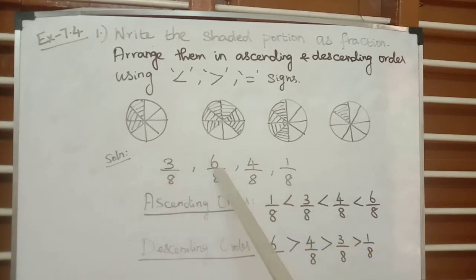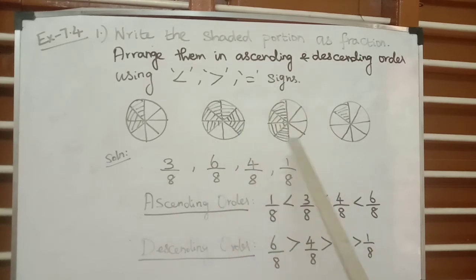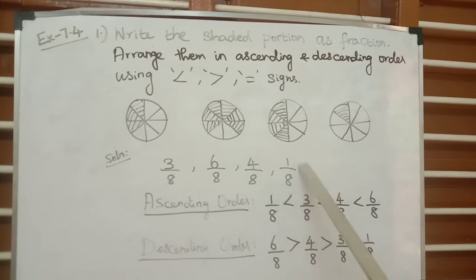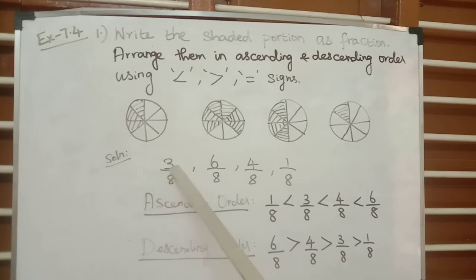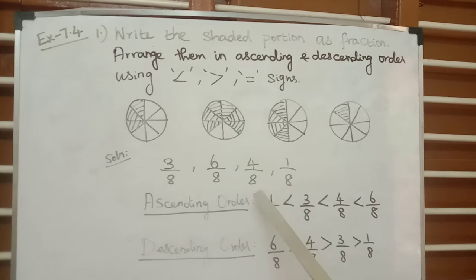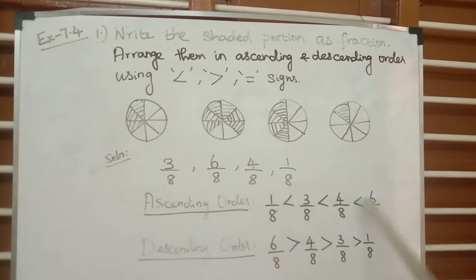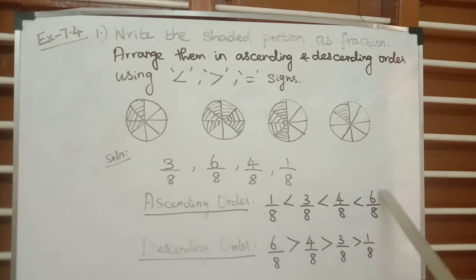The numerator values are 3, 6, 4, and 1. Among these, 1 is the smallest, so the ascending order is: 1 by 8, which is less than 3 by 8, which is less than 4 by 8, which is less than 6 by 8.